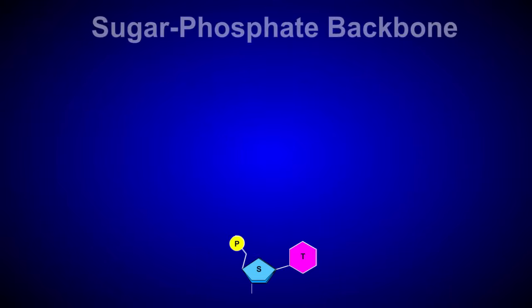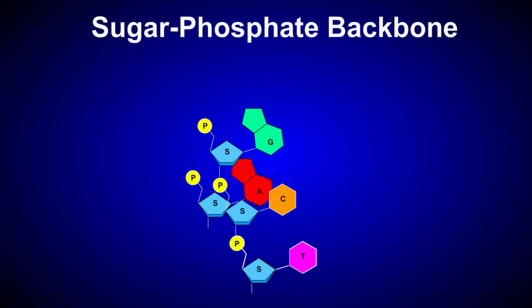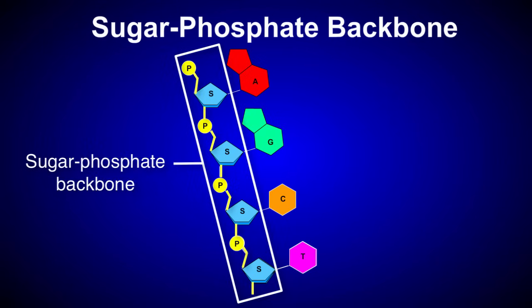Nucleotides are linked together by dehydration synthesis, or polymerization reactions, between the sugar of one nucleotide and the phosphate group of a second nucleotide. In the process, a sugar-phosphate backbone is formed, linking the nucleotides together.